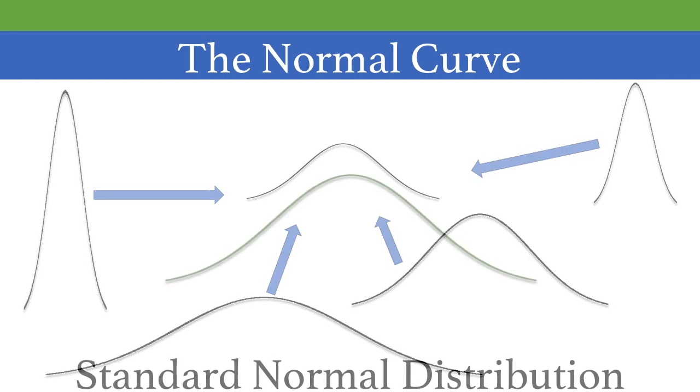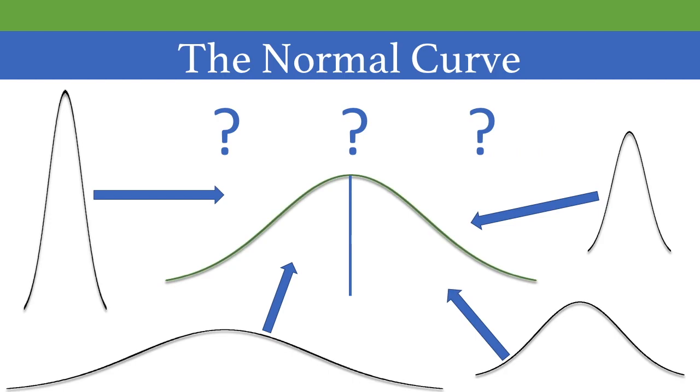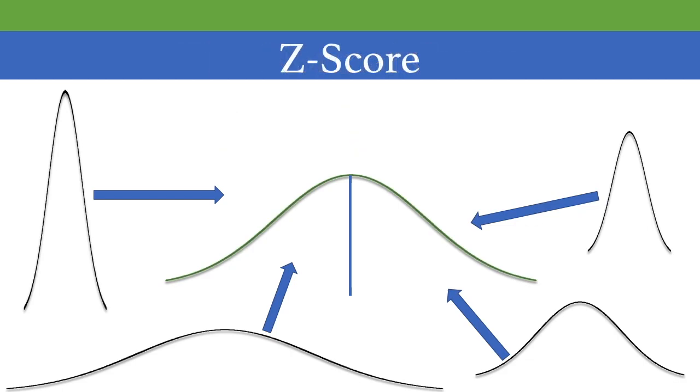They developed the standard normal distribution with a mean of zero and a standard deviation of one. Then they could figure out the different points on the curve and their associated probabilities. But now the problem is how do all the normal curves point back to this one? This is where the z-score comes in. This simple formula can take any point on a normal distribution and standardize it to what we call a z-score. And then we use this score to find the area and then the probability via the standard normal distribution.